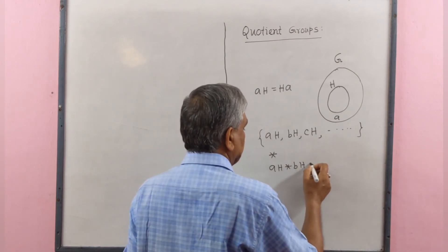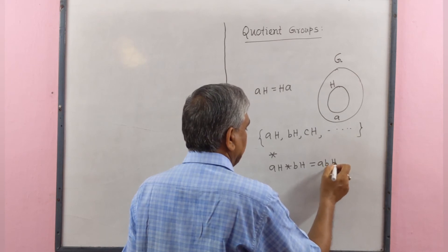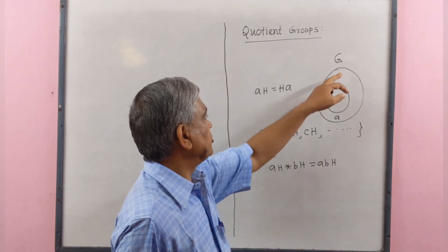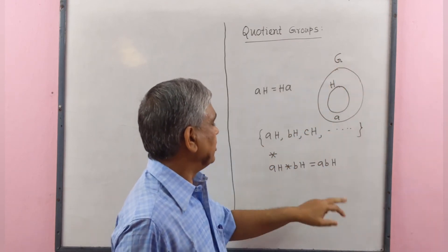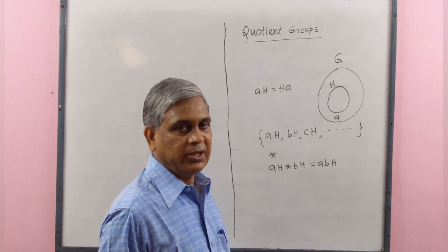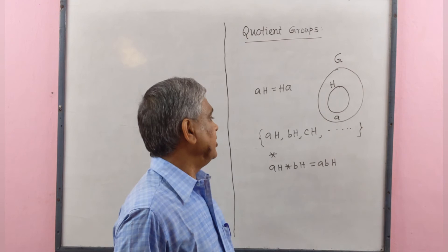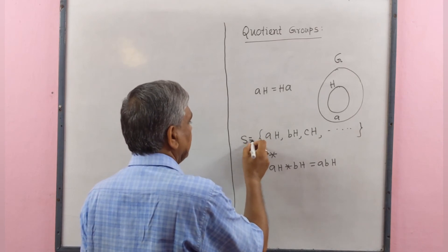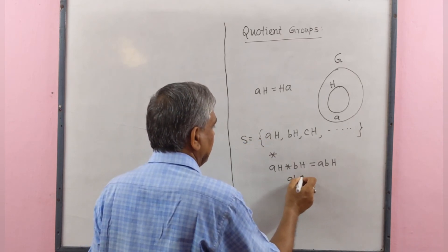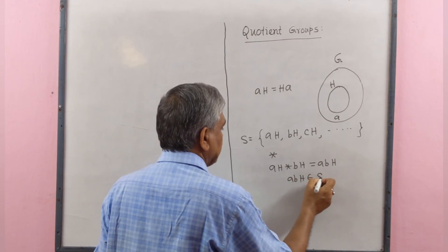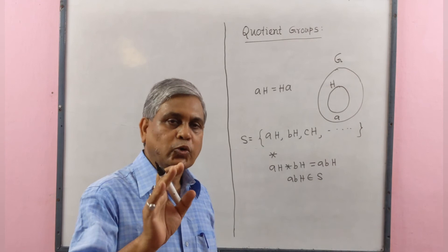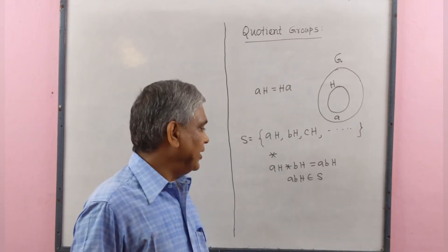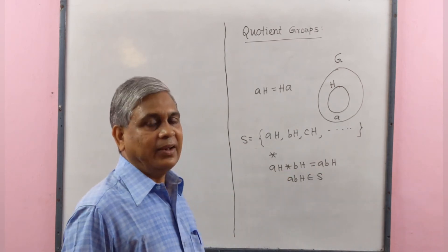Since in a group we have a given binary operation, we wish to define a binary operation on this set. Let the binary operation be denoted by star. Therefore AH star BH equals ABH, where AB means A operation B, the binary operation of G. And ABH is also a left coset, meaning if this is set S, then ABH belongs to S.